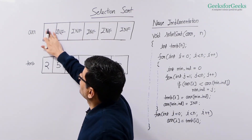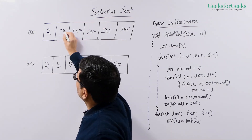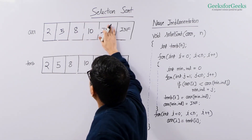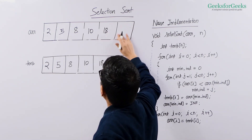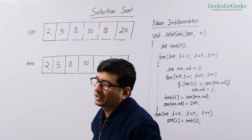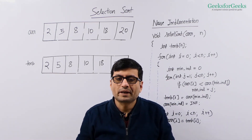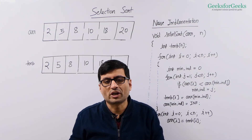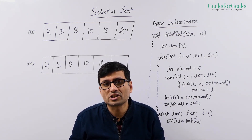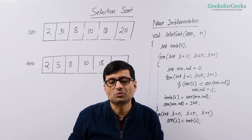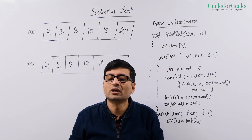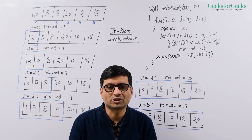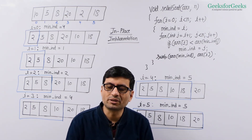So we copy these elements — 2, 5, 8, 10, 18, and 20 — back into the original array. That is our final sorted array. Now in this solution we are using an extra array. This selection sort algorithm should be in-place; we should not be using an extra array to store the sorted array. Let us now see a better implementation that does not use an auxiliary array and does all operations within the same array.